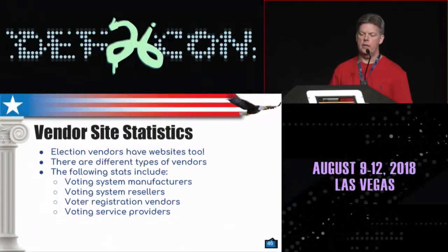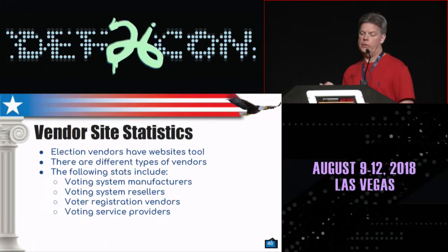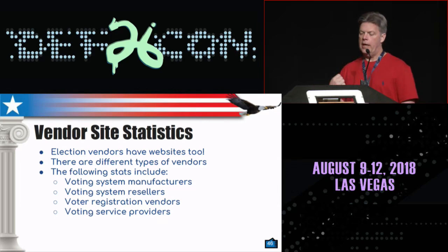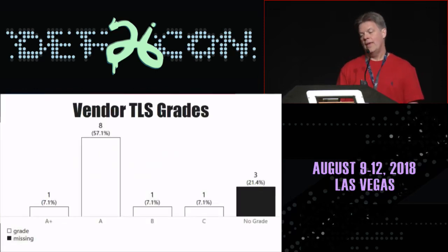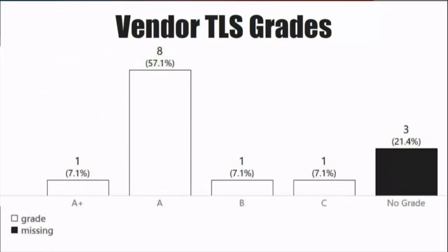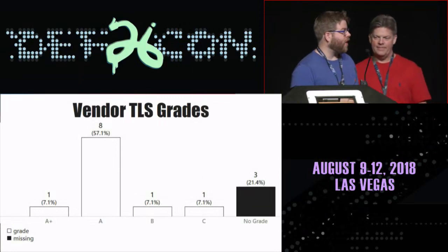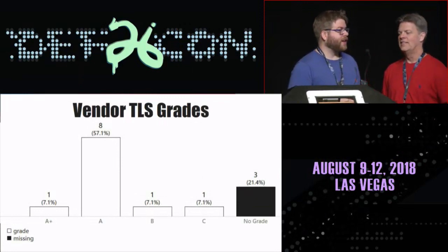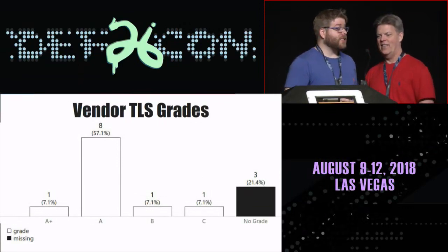It turns out that vendors have websites too. These are the people who might produce some of the software or some of the hardware — might be some voting system resellers, voter registration vendors, or voting service providers. We saw some failures here as well. We did contact the vendors, and good news is they were able to address everything pretty quickly — except for one. One kind of got crappy with me. It sort of turned into a 'this is not a vulnerability, don't call this a vulnerability' type issue. I was like, listen, I don't care — fix it. They were like, don't ever talk about this to anyone. So we're not saying anything.